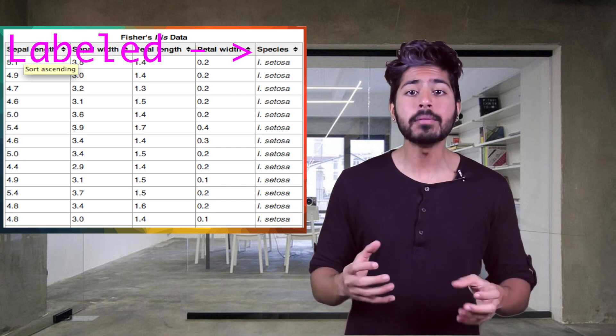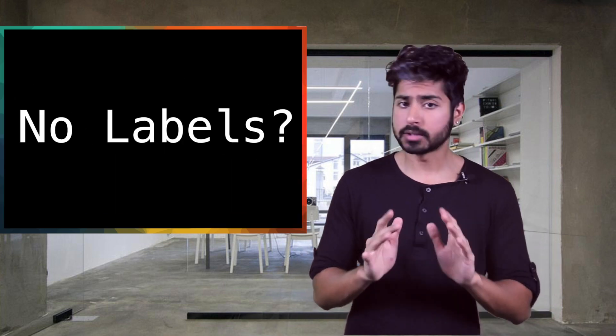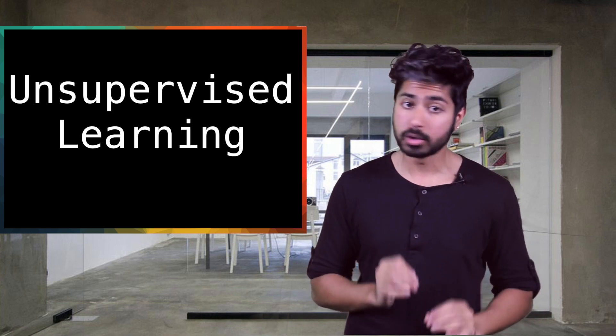Because our data is labeled, the type of learning we're doing is called supervised learning. If we didn't have labels for our data, just features, then it would be called unsupervised learning.